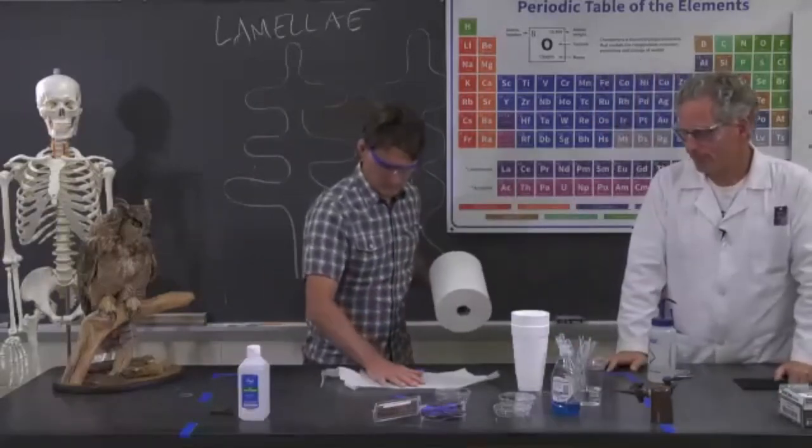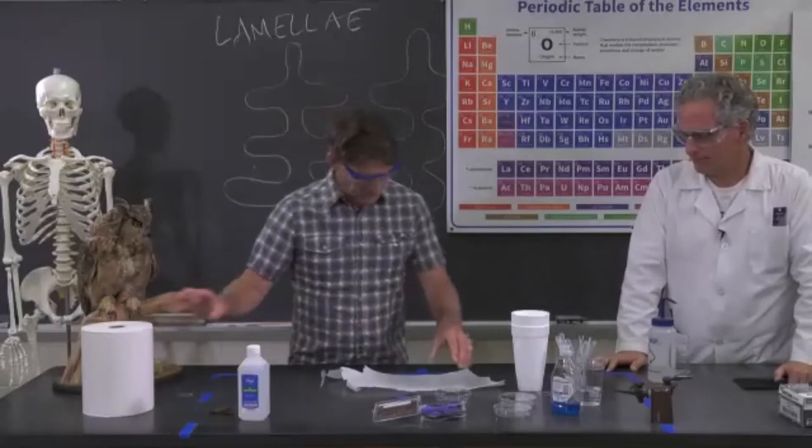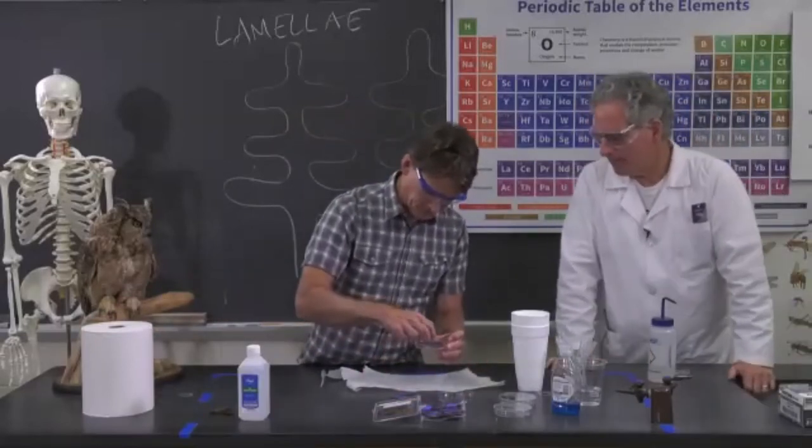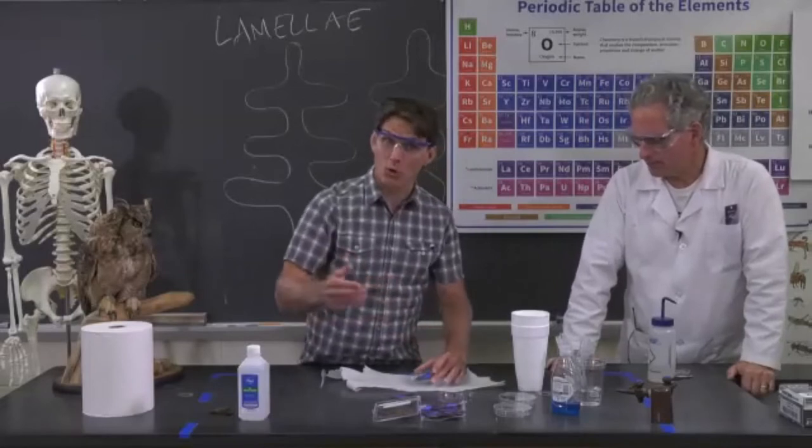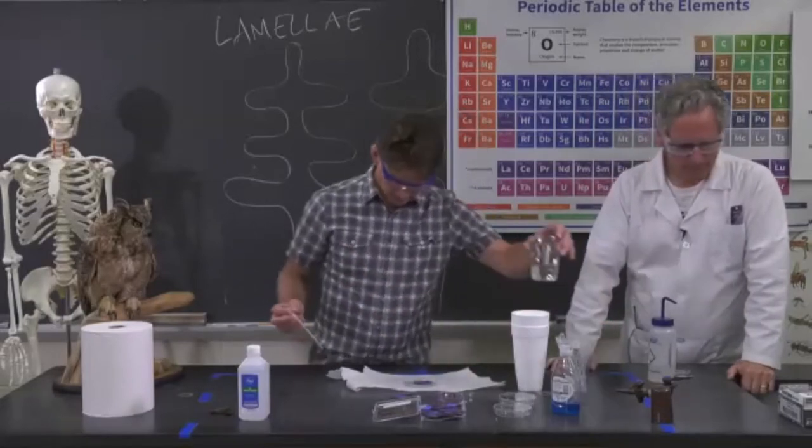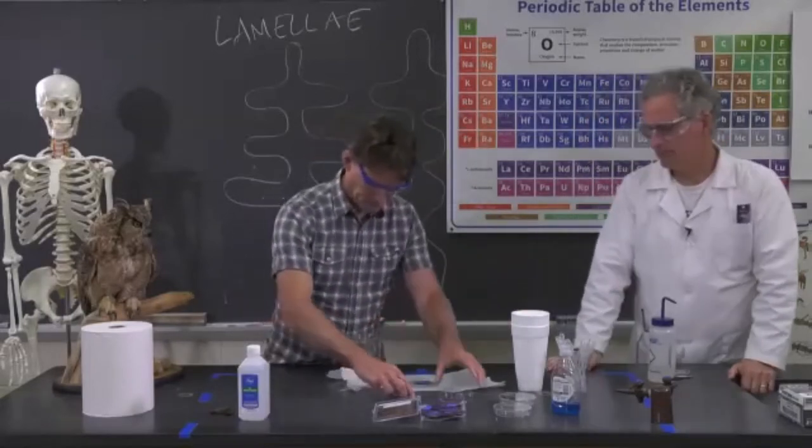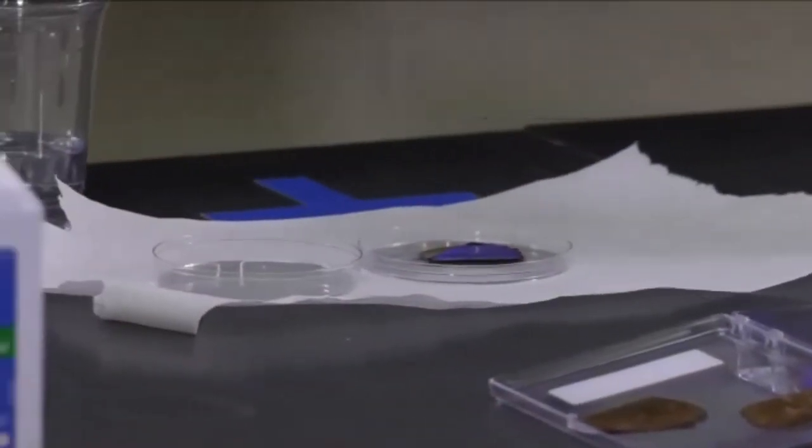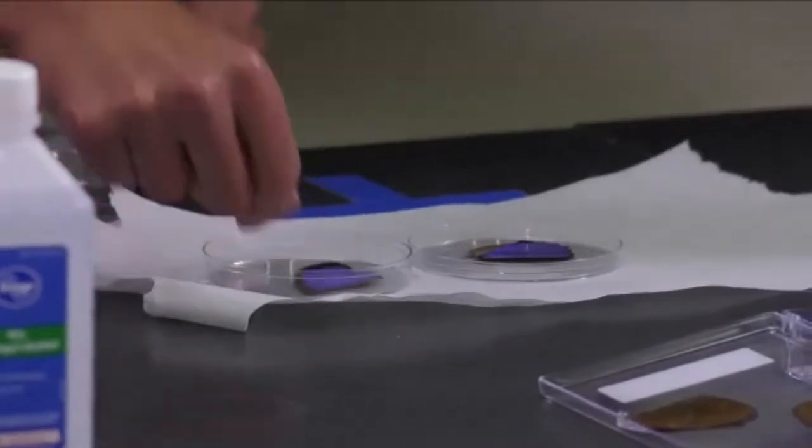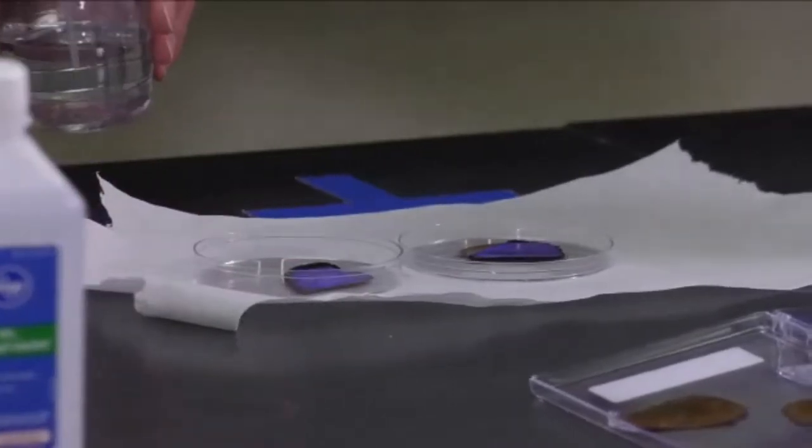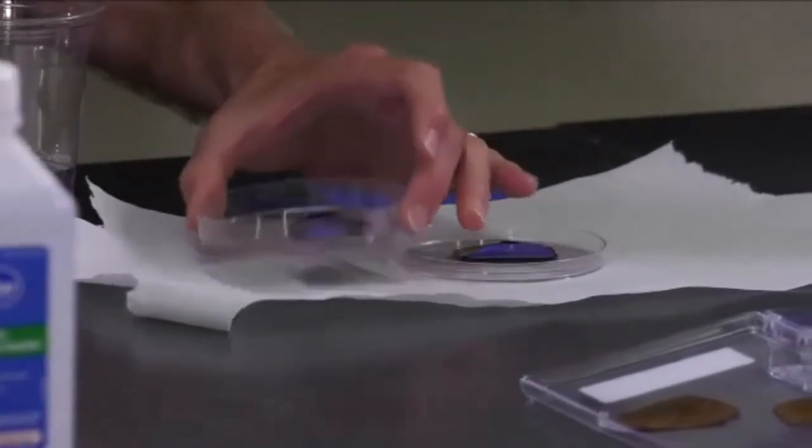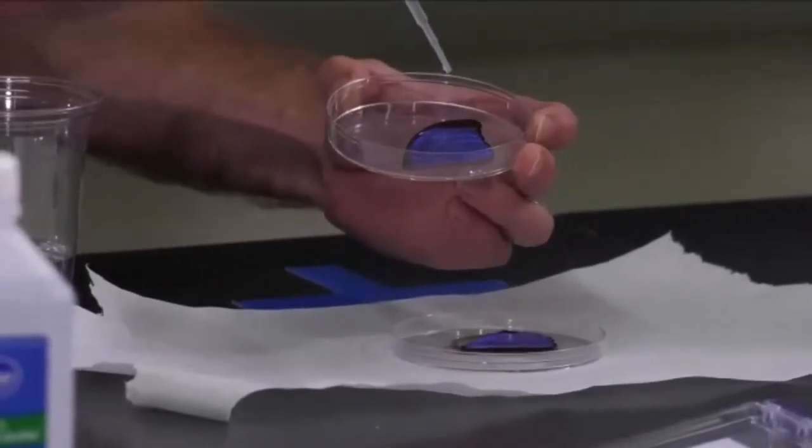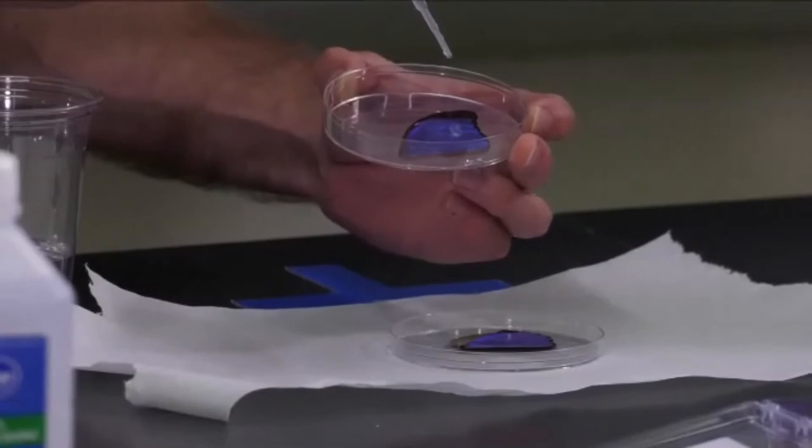Now what I'm going to do is take my blue morpho butterfly wing and we're going to pour a little bit of water on it and see what happens. I've got some water here. This is all stuff you can certainly do if you like. I'm going to add a few drops of water on there. Oh, look at that! It rolls right off.